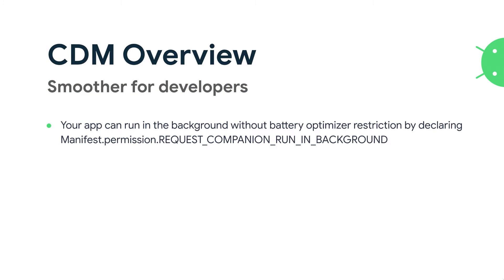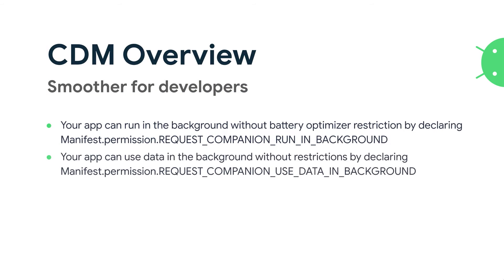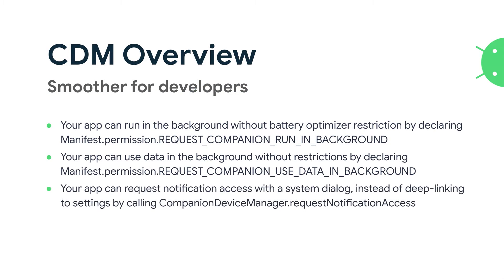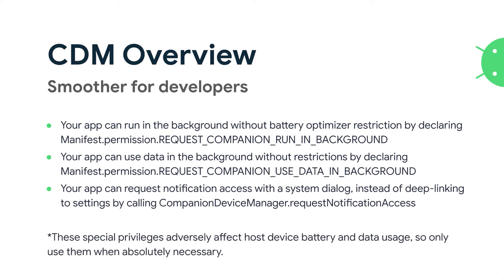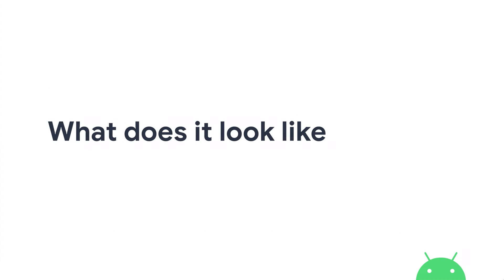A few more benefits: you can get a certain set of special powers by specifying these in your manifest — the ability to run in the background, the ability to do data in the background, and it makes your life easier when it comes to notifications. All of this is available online in terms of documentation, so I'm zooming through it but you'll be able to look at it after.